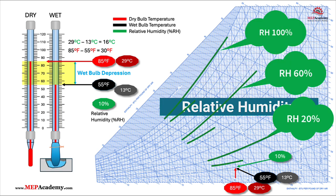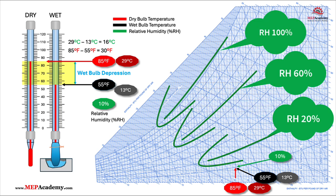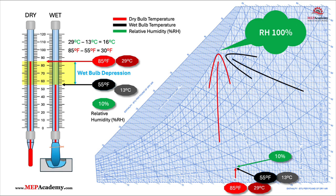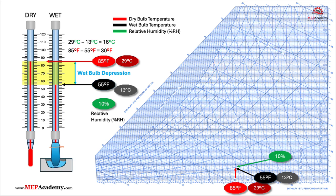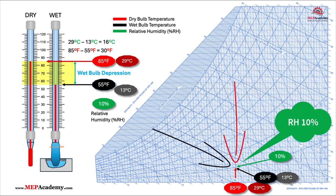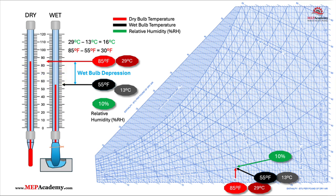Relative humidity is the percentage of moisture the air holds compared to the maximum it can hold at that temperature. When the dry bulb and wet bulb temperatures are close together, relative humidity is high because less evaporation is occurring. When they are far apart, the air is dry and relative humidity is low, as there is more capacity for moisture to evaporate into the air. We can see that the relative humidity is at 10%.